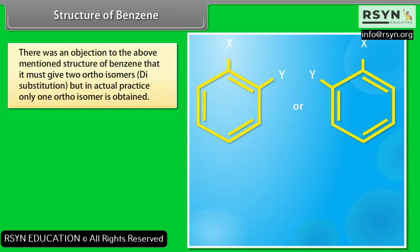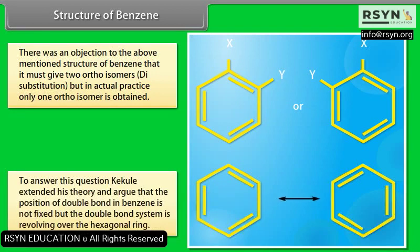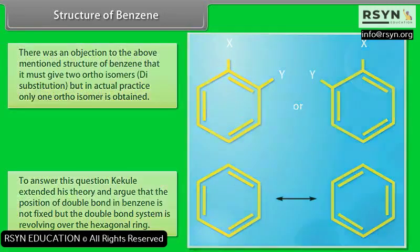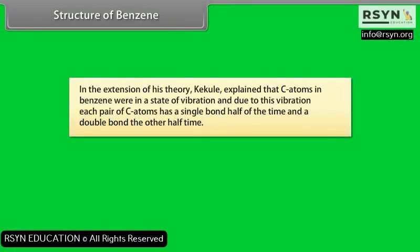There was an objection to Kekulé's structure: it must give 2 ortho-isomers upon disubstitution, but in actual practice only one ortho-isomer is obtained. To answer this, Kekulé extended his theory and argued that the position of the double bond in benzene is not fixed, but the double bond system is revolving over the hexagonal ring. He proposed that all C–C positions have a partial double bond character. Kekulé explained that C atoms in benzene were in a state of vibration, and due to this vibration, each pair of C atoms has a single bond half of the time and a double bond the other half of the time.